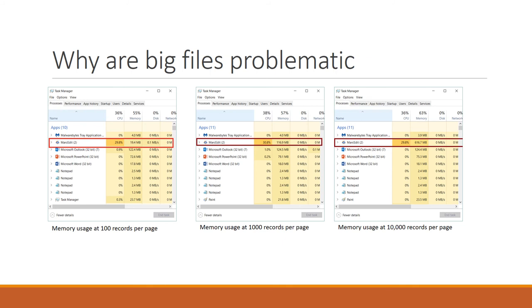Here's an example — I've snapshotted three instances of loading data. The first one is memory usage at 1,000 records per page. At the point of render, the application is consuming 19.4 megabytes; when idle it uses roughly 15 to 17 megabytes. That means the 1,000-record file — roughly about a megabyte to a megabyte and a half — consumes roughly about two and a half megabytes to render. The second example: a thousand records represents roughly about 10 megabytes. Using 16 megabytes as the base level, it costs 100 megabytes to render that 10 megabyte file — a one-to-ten difference.